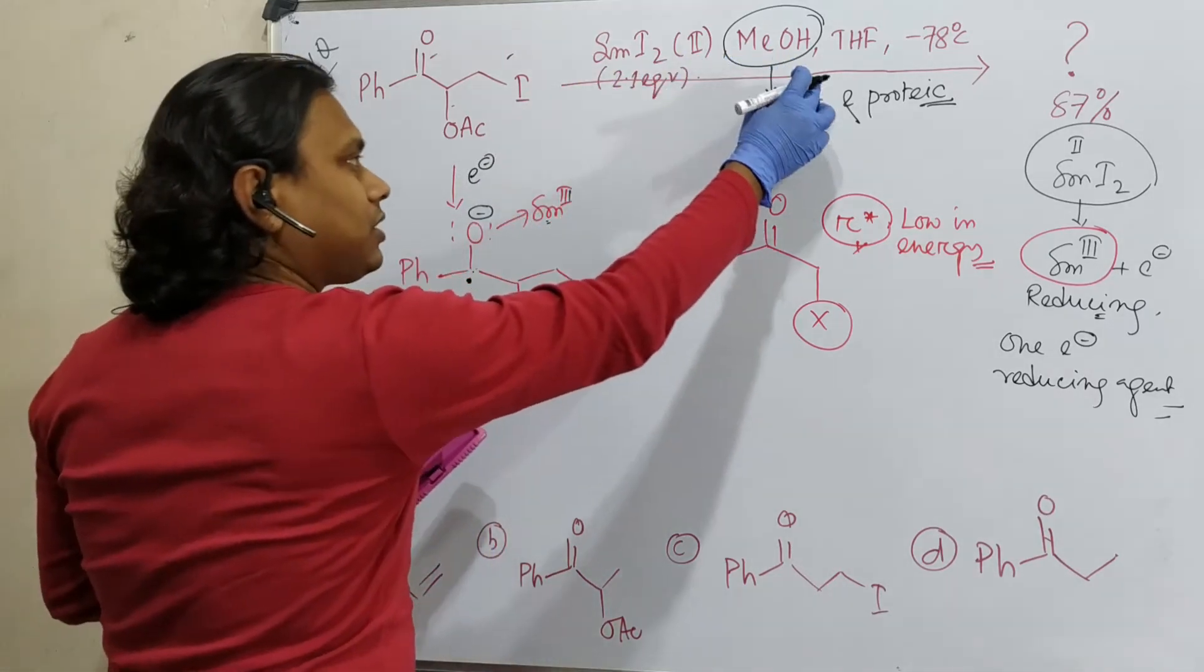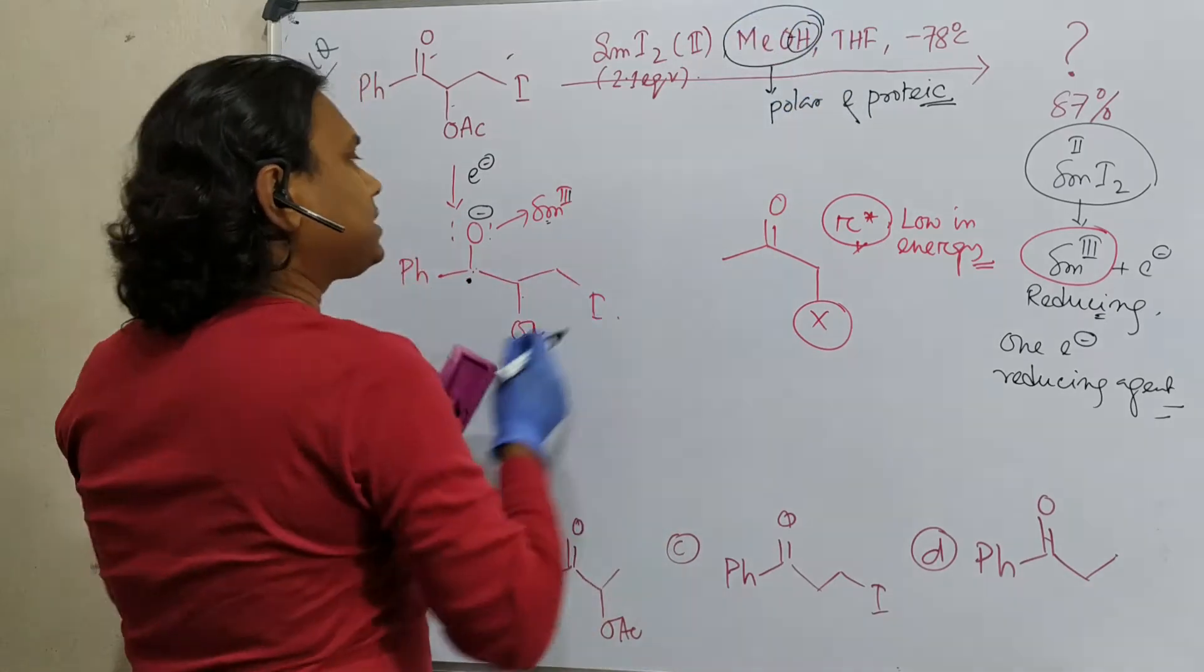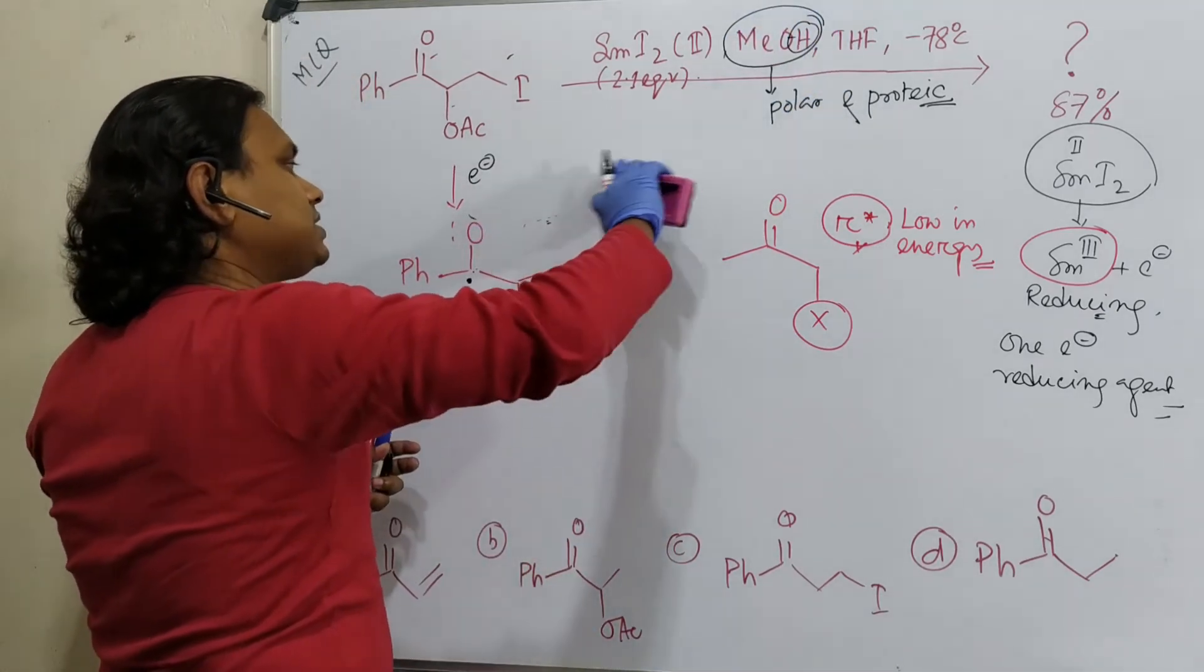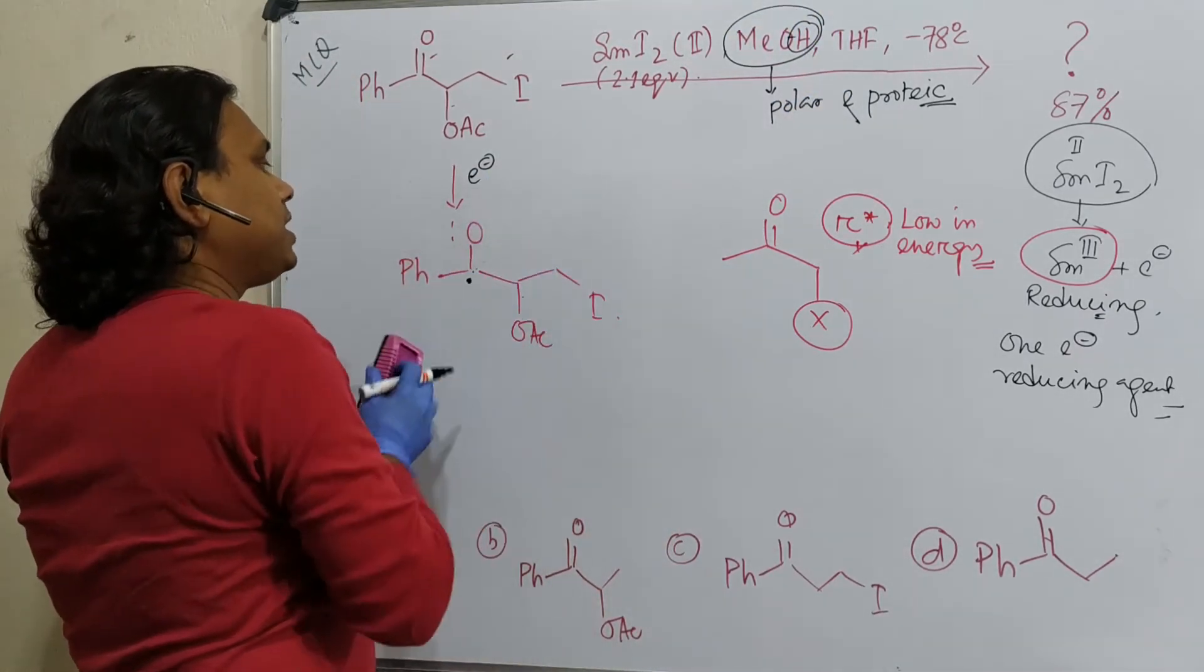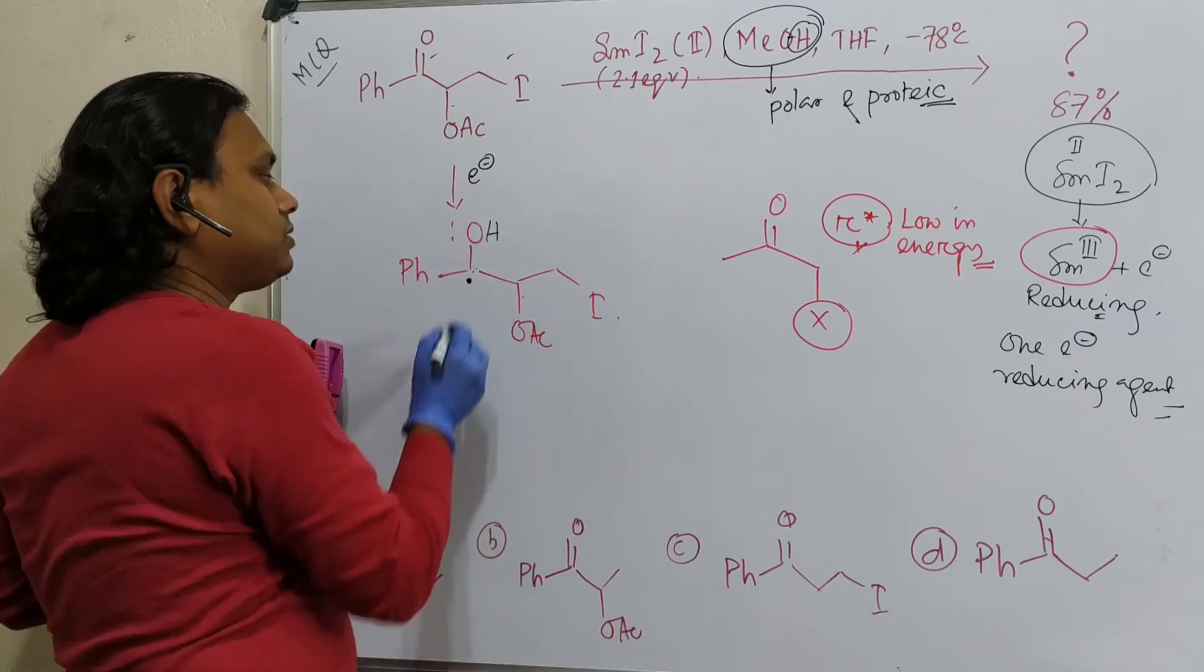Now what happens? Since there is methanol, it's polar and protic means there is an OH. It can give hydrogen. So it produces the OH.